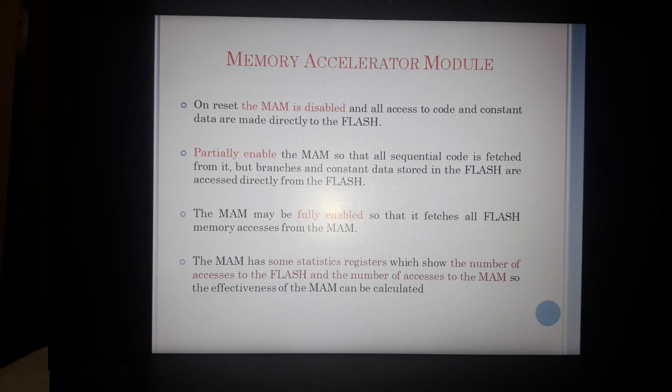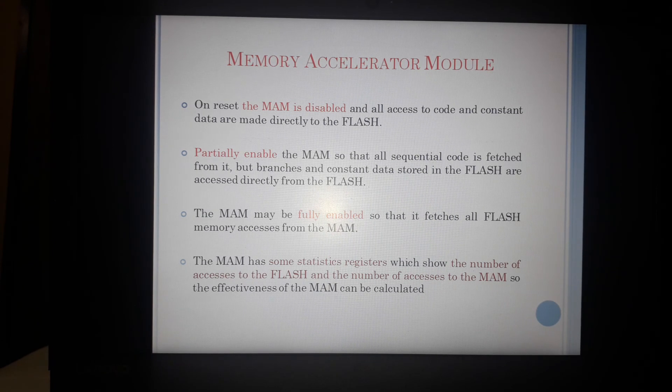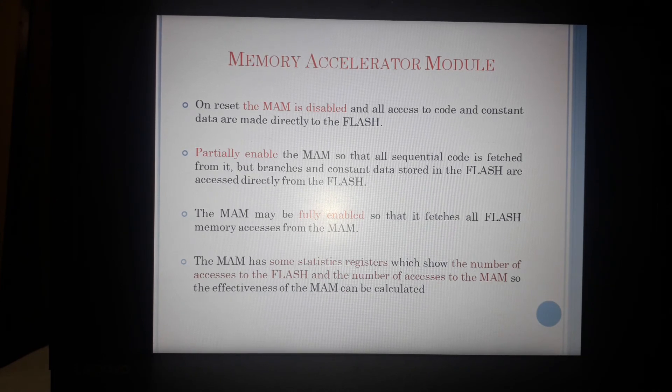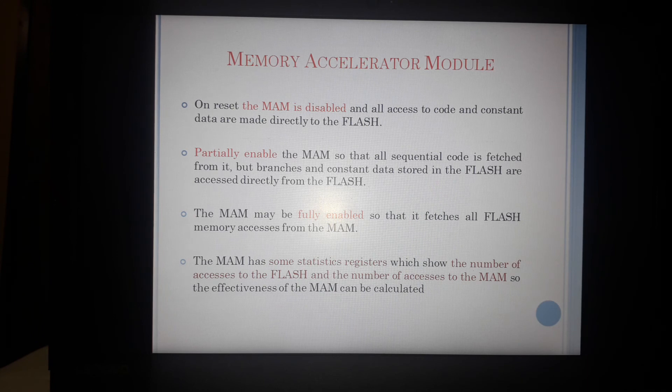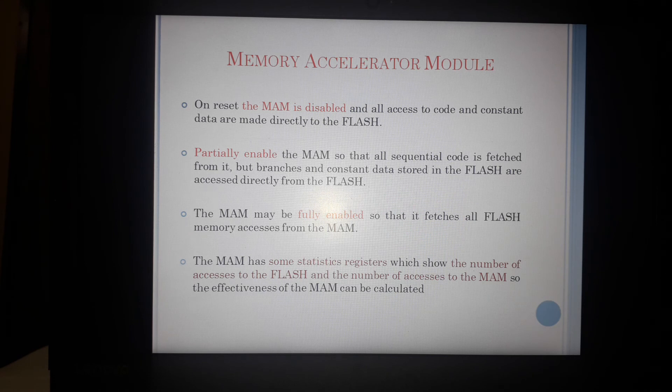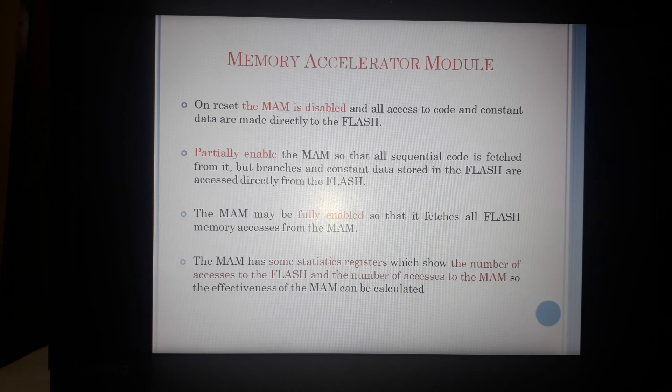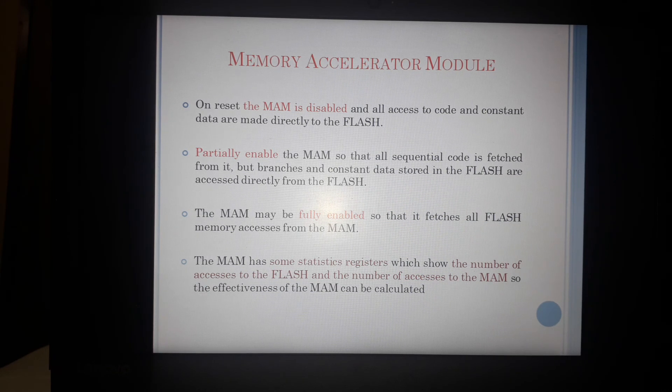But partially or fully, I cannot always say that fully is going to give me the best performance. That depends how many loops and branches you have. If we have more number of loops and branches, though we do have buffers in this for looping, for small loops or the loops which are there. But still, if too many loops and branches are there, use of MAM may provide a limitation. Because it is again going to go to a different address, pick up all instructions, then come to another set of addresses which is different, which is out of sequence. So it may not work that efficiently. So in that case, we can use partially enabled.